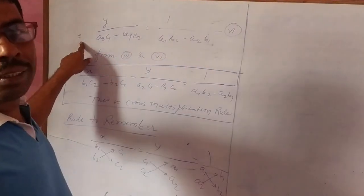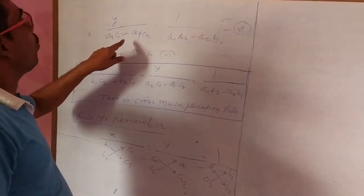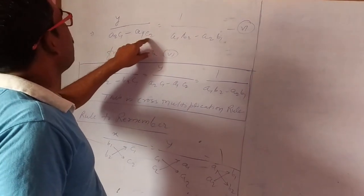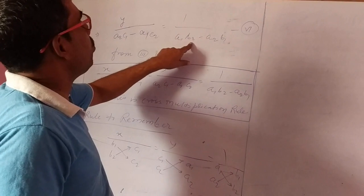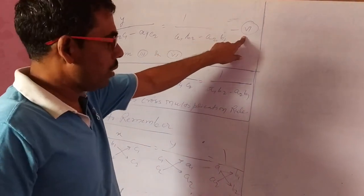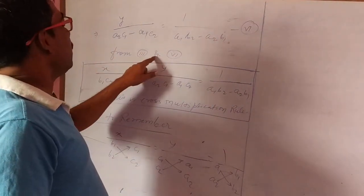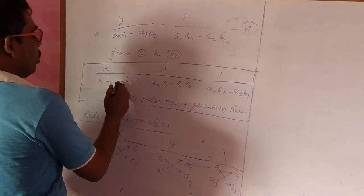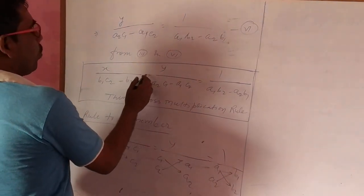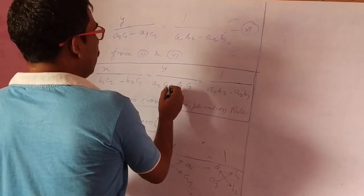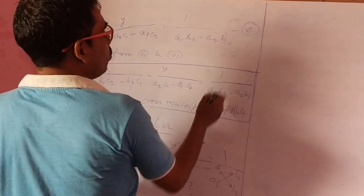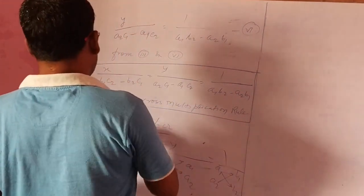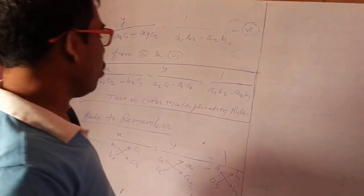This implies y by a2c1 minus a1c2 equal to 1 by a1b2 minus a2b1. From equations 3 and 6, x by b1c2 minus b2c1 equal to y by a2c1 minus a1c2 equal to 1 by a1b2 minus a2b1. This is called cross multiplication.